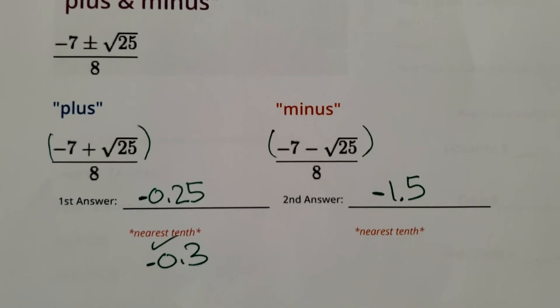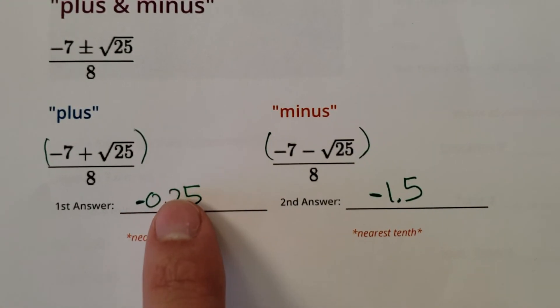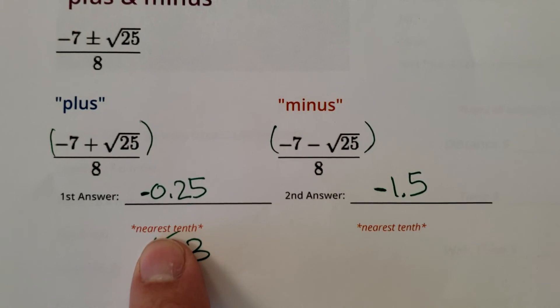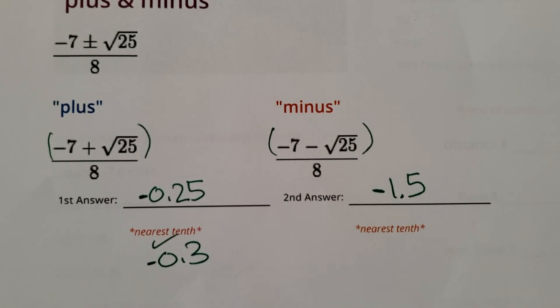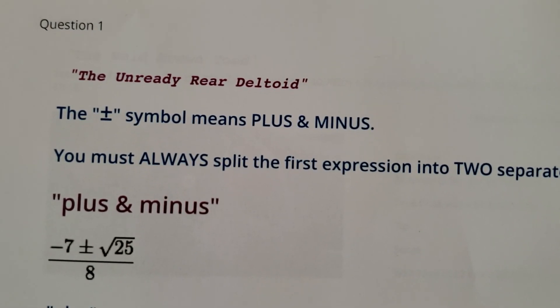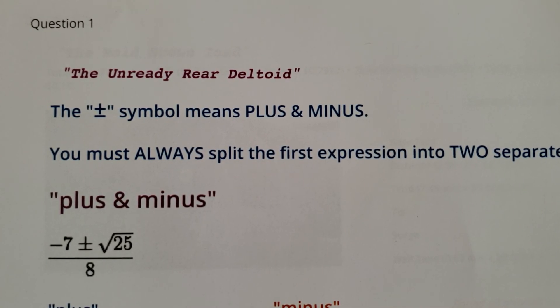And then also don't forget to follow the rules of the extended fraction bar. Do everything on top, then divide by the bottom number and then just go with your instincts. If it's a nice decimal, I'll allow it. But if you follow the rules, I'll never punish you for that either. All right. That is the unready rear deltoid. Hashtag stretch.